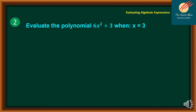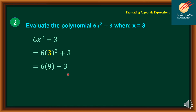Let's have another example. Evaluate the polynomial 6x² + 3 when x is equal to 3. Write down the given expression 6x² + 3, and plug in the value x equals 3. Simplify: 3 squared gives us 9, times 6 plus 3. So 6 times 9 gives us 54, plus 3 equals 57. Therefore, the value of 6x² + 3 when x equals 3 is 57.